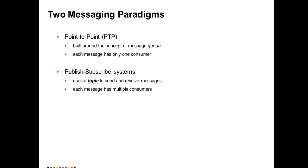First, two messaging paradigms. There is P2P, point-to-point, and there is publish and subscribe. P2P is basically about the queue, and each message has only one consumer. So there is only one client accessing the queue. However, if you have multiple clients and they need to access the same messages, in that case you should use a topic, where each message goes to multiple consumers.